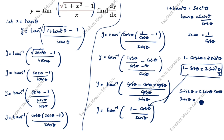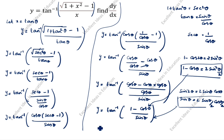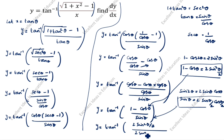Also, sin theta equals 2 sin(theta/2) cos(theta/2). Substituting both: y is equal to tan inverse of 2 sin squared(theta/2), divided by 2 sin(theta/2) cos(theta/2). The 2 and one factor of sin(theta/2) cancel, leaving sin(theta/2) divided by cos(theta/2).